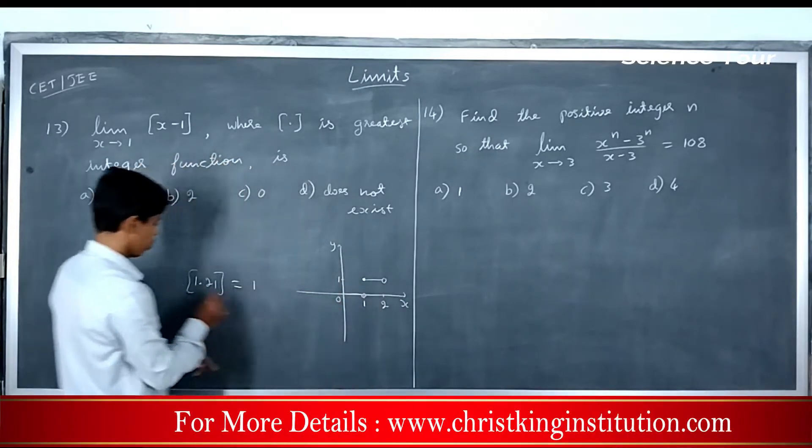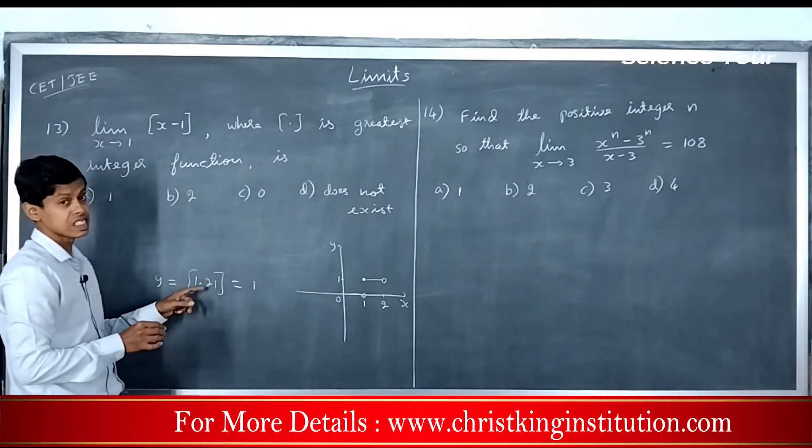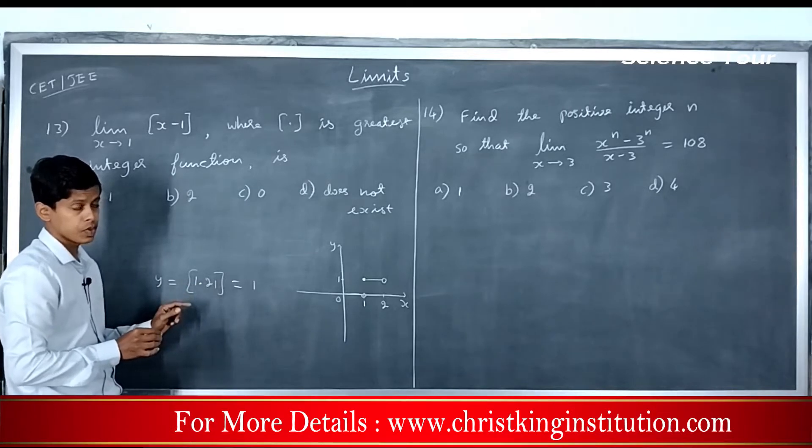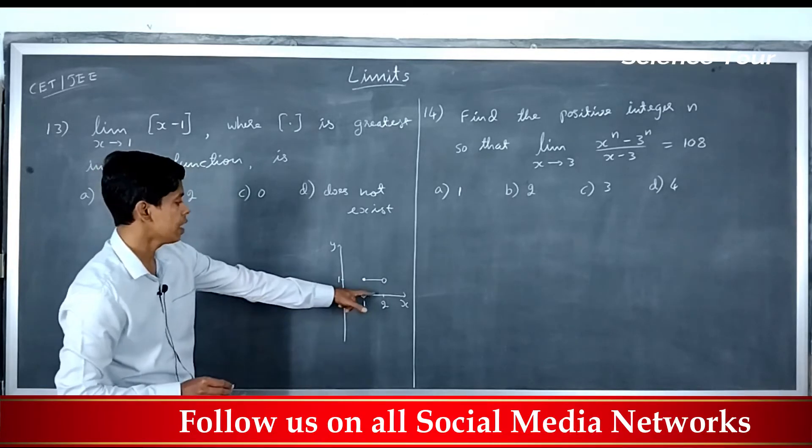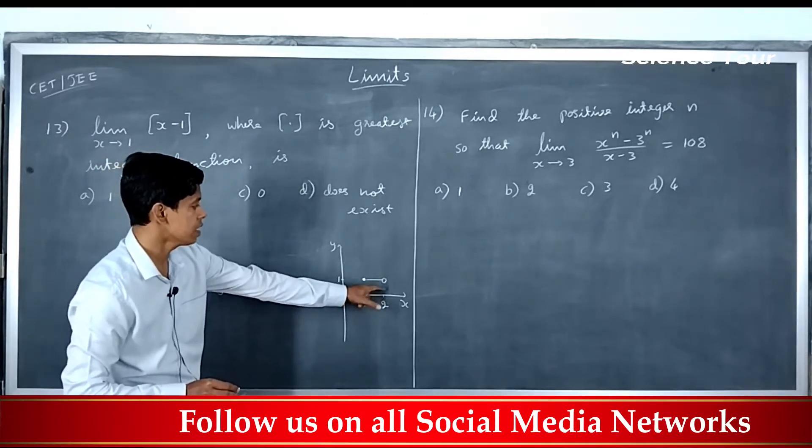And y is 1 when x is 1.21. So when x is 1.21, y is 1. And at 1.999, it is still 1.